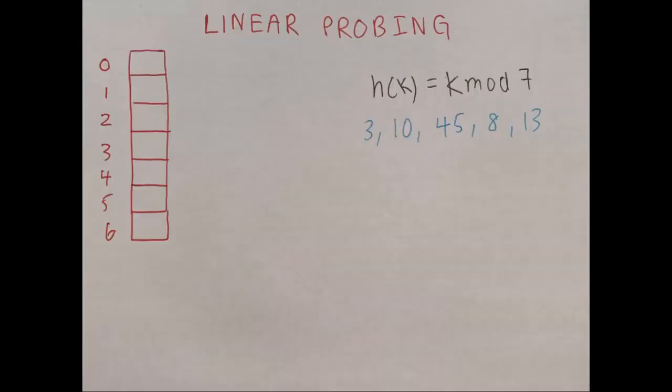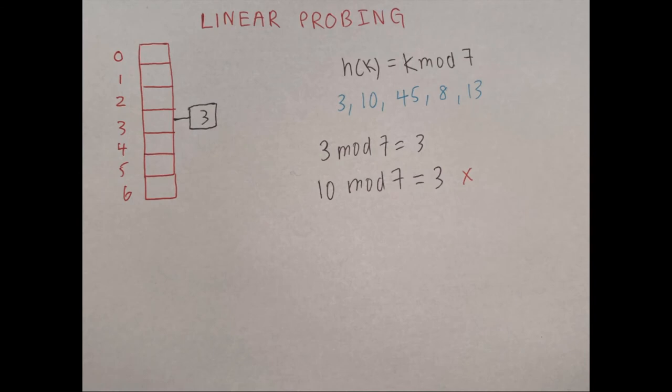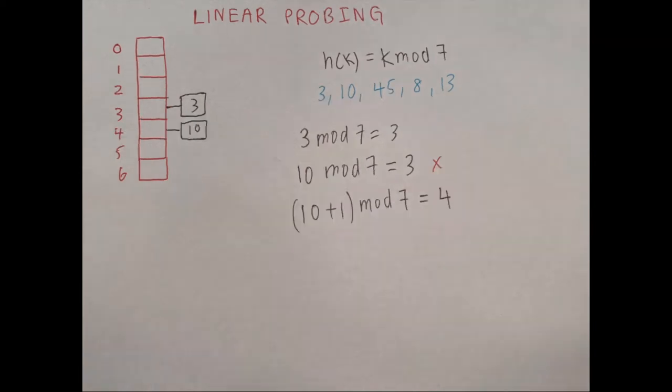For linear probing we use the same hash function as before: k mod 7. We do 3 mod 7 and get 3. Next, 10 mod 7 is also 3. But unlike separate chaining we don't build a linked list — instead we find a new index. For linear probing we add 1 and mod 7 again: 11 mod 7 is 4, so we place 10 at index 4.